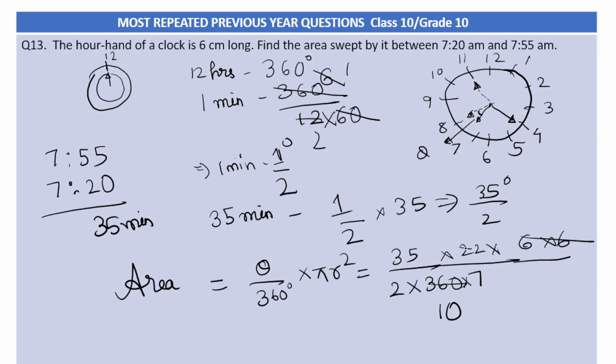I will directly cut this 36 and 10 will be here. Now here 2 into 11 is 22, and this got cut. 7 times 5 is 35. So what remains is 5 times 2 which is 10. So what remains is 11 by 2 centimeter square. This much area the hour hand sweeps between 7:20 am and 7:55 am.